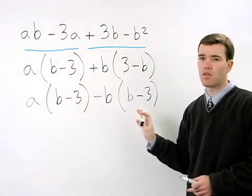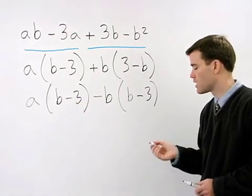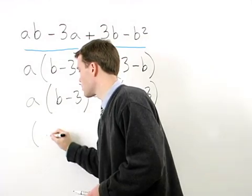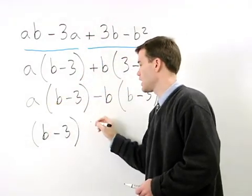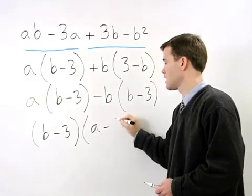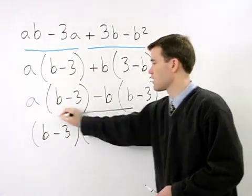Now we can factor out the greatest common factor B minus 3 from these two terms and we're left with A minus B inside your second set of parentheses.